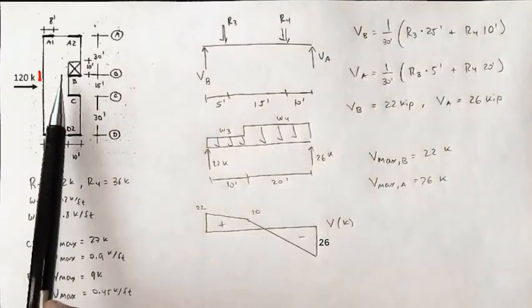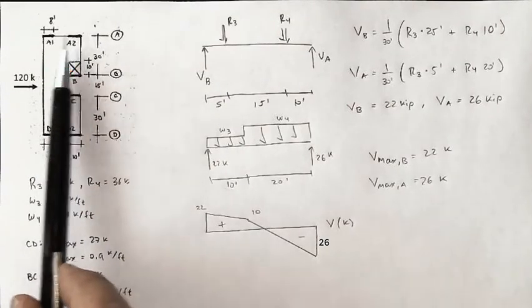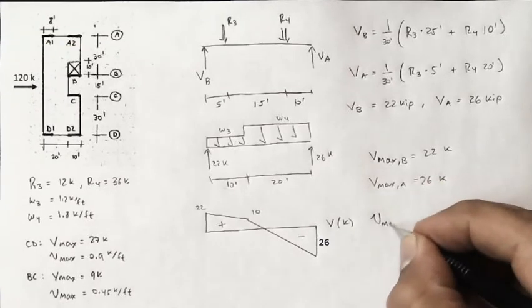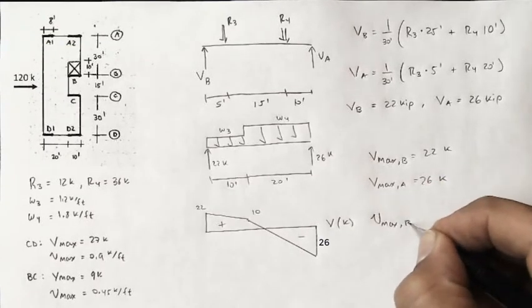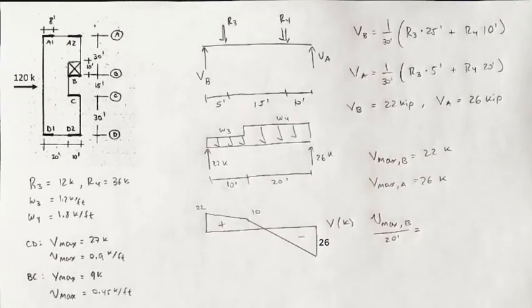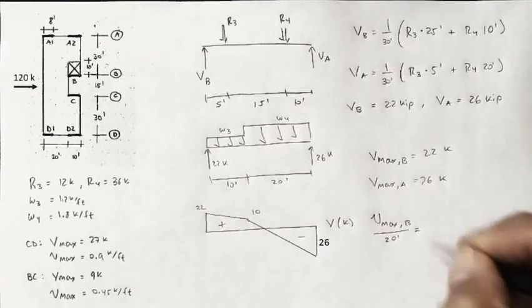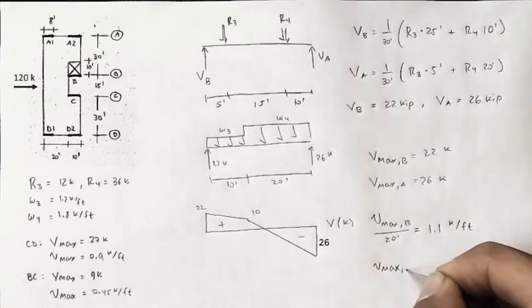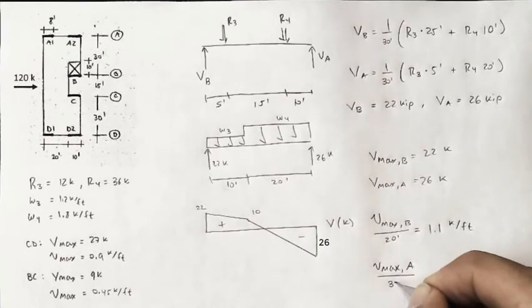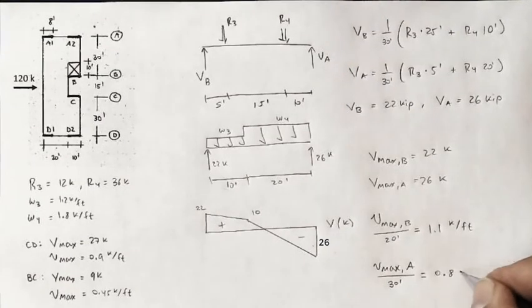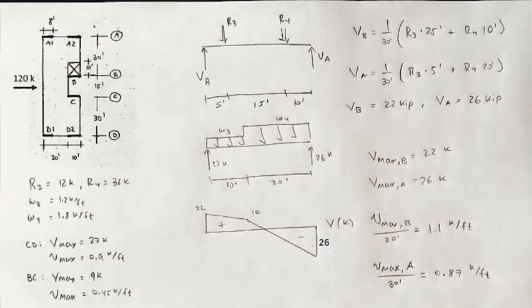Over this left-hand segment, the depth is 20 feet. Over this right-hand segment, the depth is 30 feet. So per unit depth, these are actually going to be different. At B, we're dividing by 20 feet. So 22 kips divided by 20 feet gives us 1.1 kips per foot. The maximum shear per unit depth at A, now we're dividing by 30 feet, is going to yield us 0.87 kips per foot.